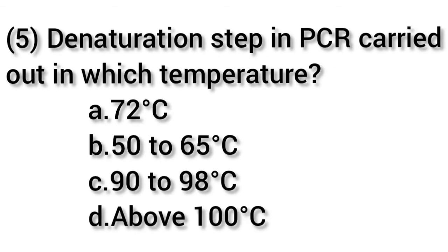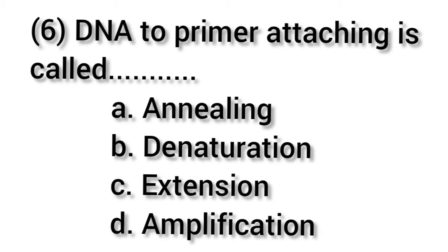The fifth question is: the denaturation step in PCR is carried out at which temperature? Option A is 72°C, option B is 50 to 65°C, option C is 90 to 98°C, and option D is above 100°C. The answer is option C — 90 to 98°C.